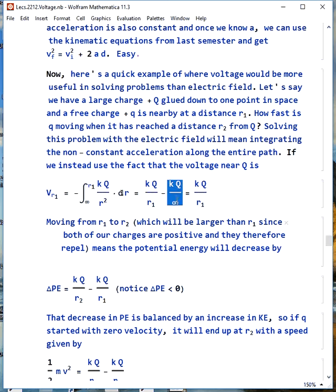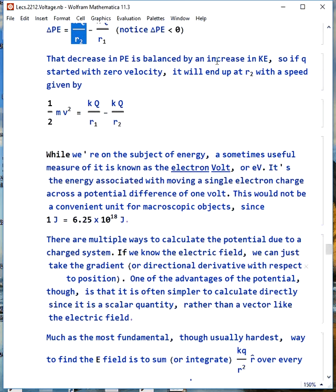If we instead use the fact that the voltage near Q is given by this integral, and since we have voltage at infinity is zero, that means the voltage is kQ over R1. So when we go from R1 to R2, which R2 will be larger than R1 since both of our charges are positive and they'll repel, that means the potential energy drops by this, k times big Q times 1 over R2 minus 1 over R1. Notice our change of potential energy is negative. We lose potential energy when it moves. The decrease in potential energy is balanced by an increase in kinetic energy. So if little q started with zero velocity, it would end up at R2 with the speed given by 1/2 mv squared is k big Q times 1 over R1 minus 1 over R2. This m here is the mass of little q.